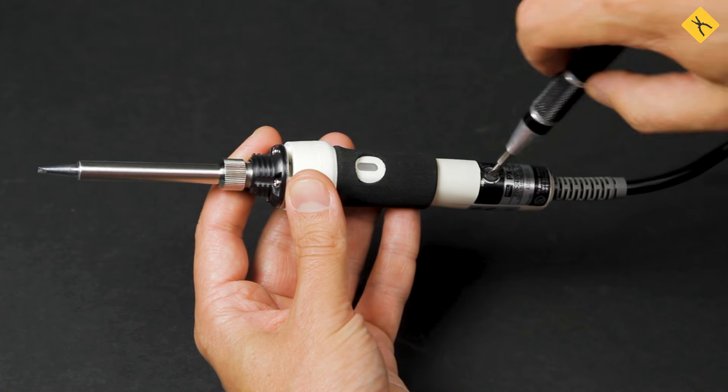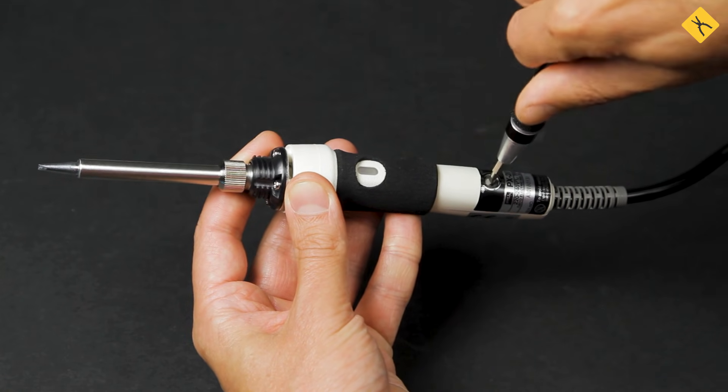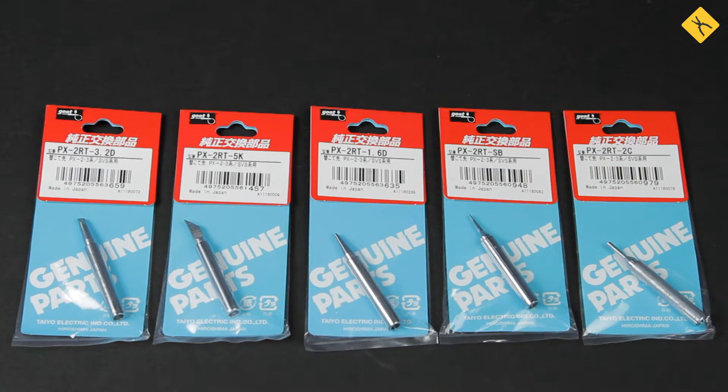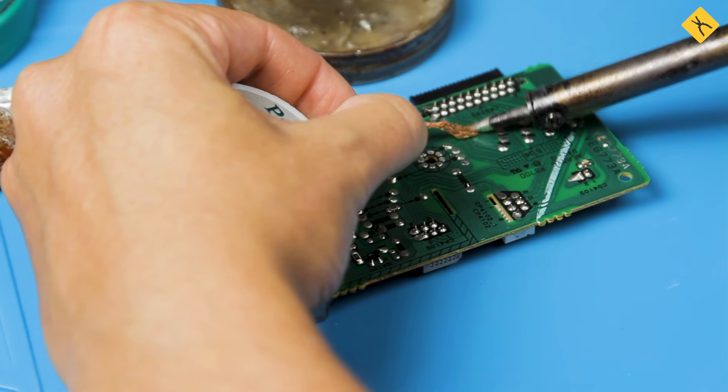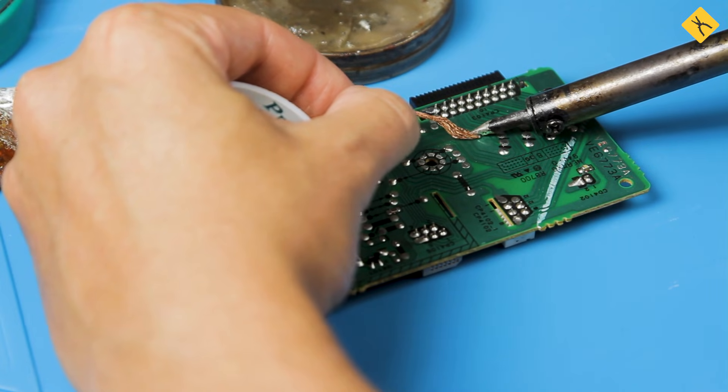Besides a soldering station, the only alternative is a temperature-controlled soldering iron. You can pick a necessary soldering tip and adjust the temperature according to your needs. The type of soldering iron you should choose directly depends on the type of repairs you are planning to do.